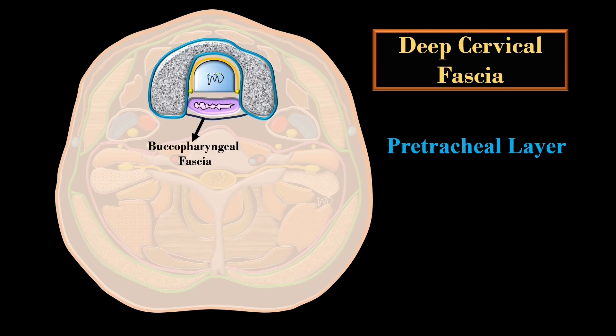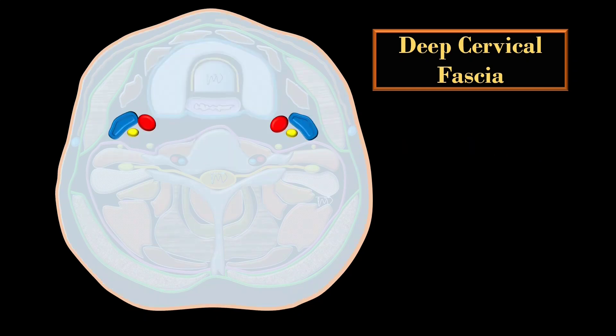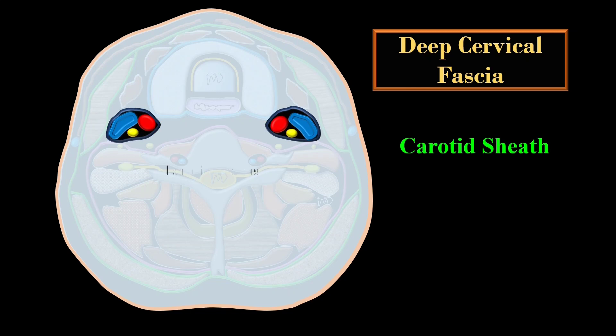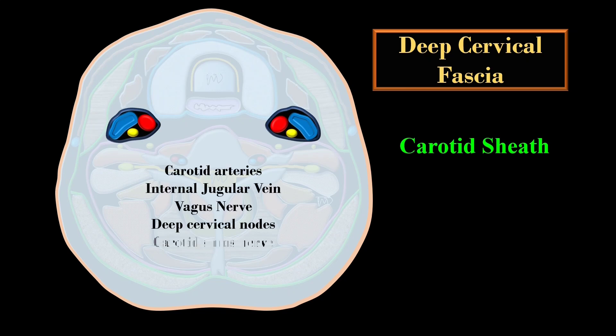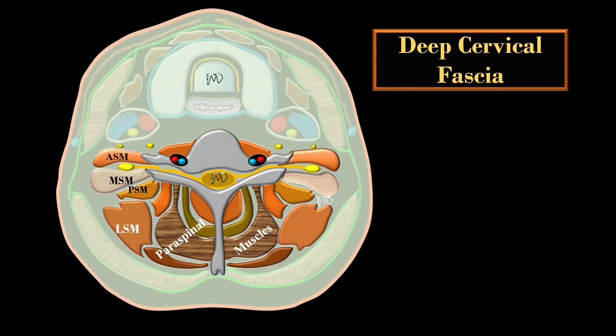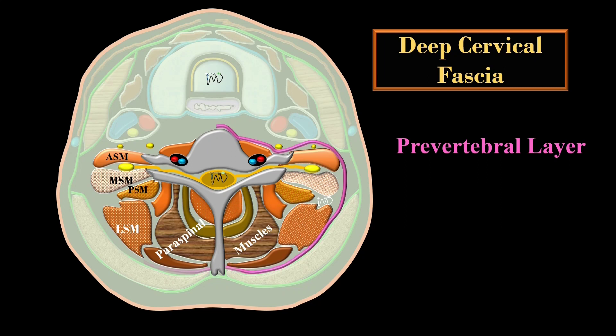The second layer is the pretracheal fascia, which surrounds the visceral compartment. Next is the carotid sheath, containing the common carotid artery, internal jugular vein, vagus nerve, and deep cervical lymph nodes. The last layer is the vertebral layer — mentioned as prevertebral, but more accurately paravertebral or perivertebral, because it encloses the cervical vertebrae with the spinal cord and associated muscles.